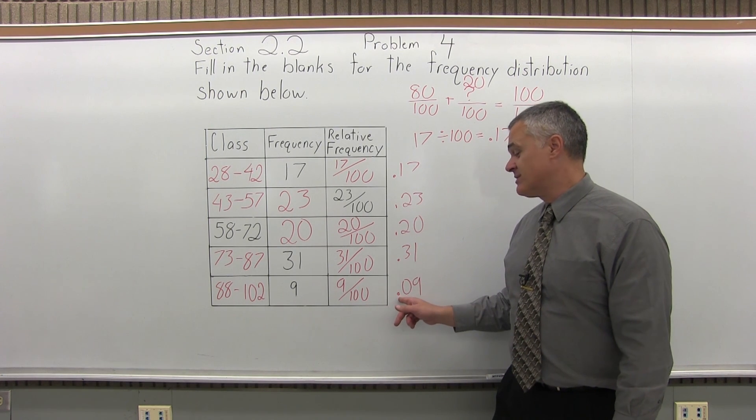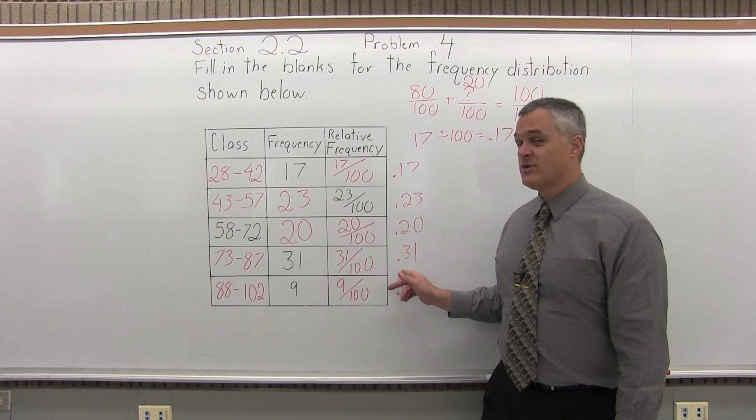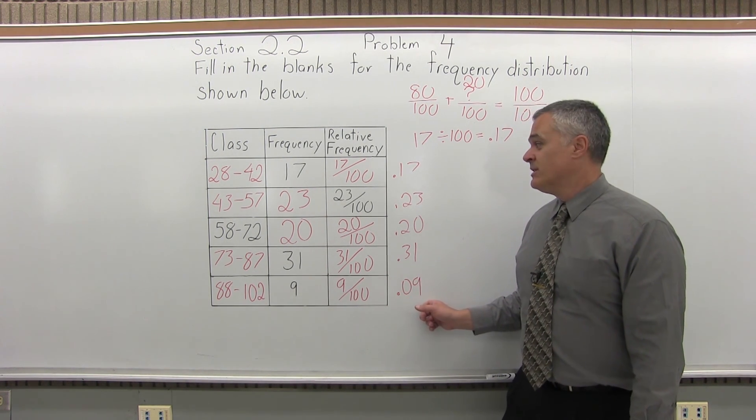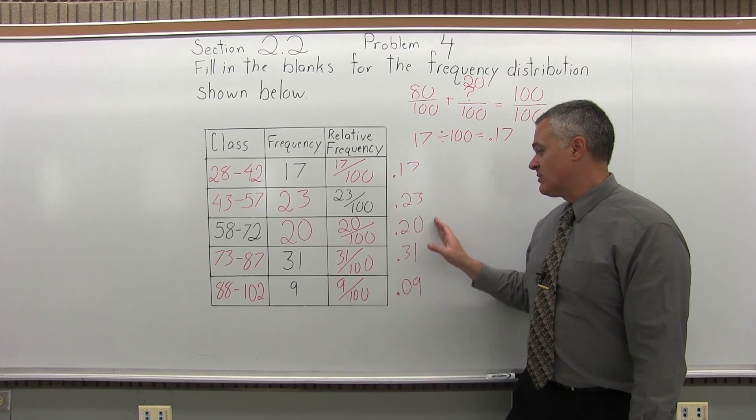.9 is 90%. .09 is 9%. Imagine each one is the rate you pay in interest on your credit card. 9% you can deal with. 90% you don't want to. So, I feel the fractions are fine. But if you have a class where they want decimals, you can just do the division for each one and put in the decimal.